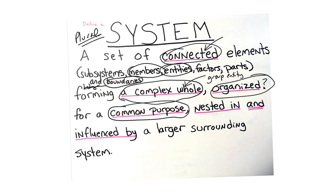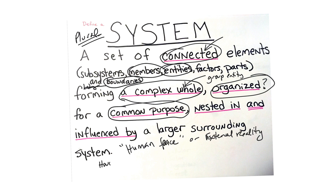Organized — and that's a lot of the work I do on internal community — and hopefully you have a common purpose, which again goes back to the work I do on internal community. Then nested in and influenced by a larger surrounding system, which is what we call human space or external reality. That could be right now your house, your neighborhood, community, the city or the state, etc.